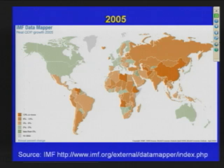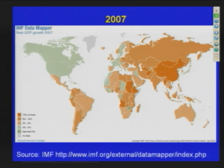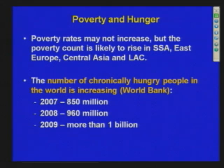These are the IMF simulations of the distribution of real GDP growth over time. Starting from 2005, orange means positive growth and lighter or whiter means zero or negative growth. Over time, the situation is getting a lot whiter, indicating a significant reduction. As a result, there will be a significant effect on poverty: in 2007 we had 850 million poor or chronically malnourished people, and in 2009 more than 1 billion are expected.